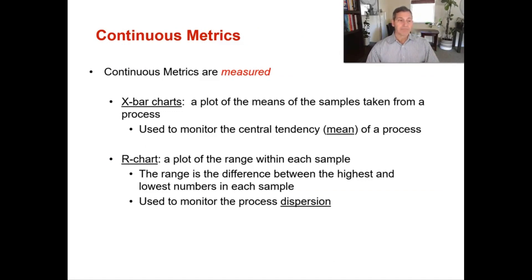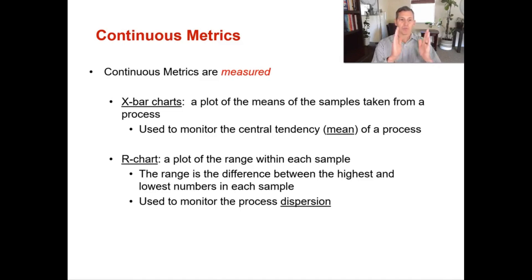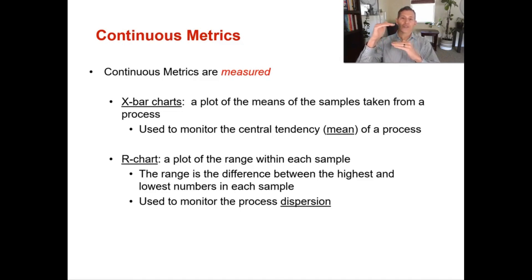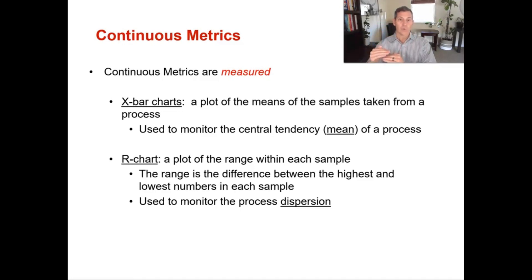Continuous metrics are measured. Your X-bar chart is a plot of the means of the samples taken from a process, used to monitor the central tendency or mean of a process. An R chart is a plot of the range within each sample — the difference between the highest and lowest number — and is used to monitor process dispersion. You want both the range and the average to stay nice and tight. If the range or average starts to increase, your process is probably out of control.